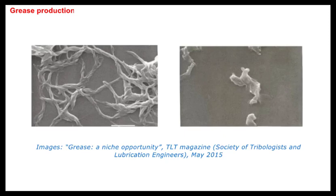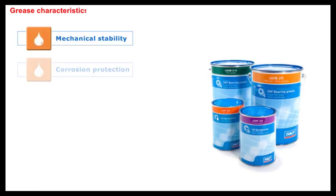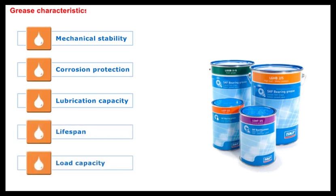How then to decide between two different greases that look alike? When choosing a grease for a bearing application, it is very important to select a grease which has characteristics appropriate to the operating conditions to which the grease will be subjected. Greases can be characterised in a number of ways, some of which are shown here. Click each icon to learn more about each of these and how these properties are assessed.